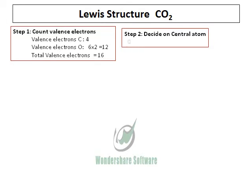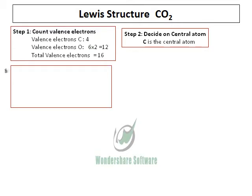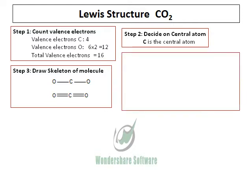Step 2 is to decide on the central atom. Carbon is the central atom in this case, and we know the valence of carbon is 4. Therefore, with carbon as the central atom, we write the Lewis structure with a single bond. Then, to satisfy the valence of carbon and oxygen, we put in a double bond between the carbon and the oxygen, to complete the octet of carbon.